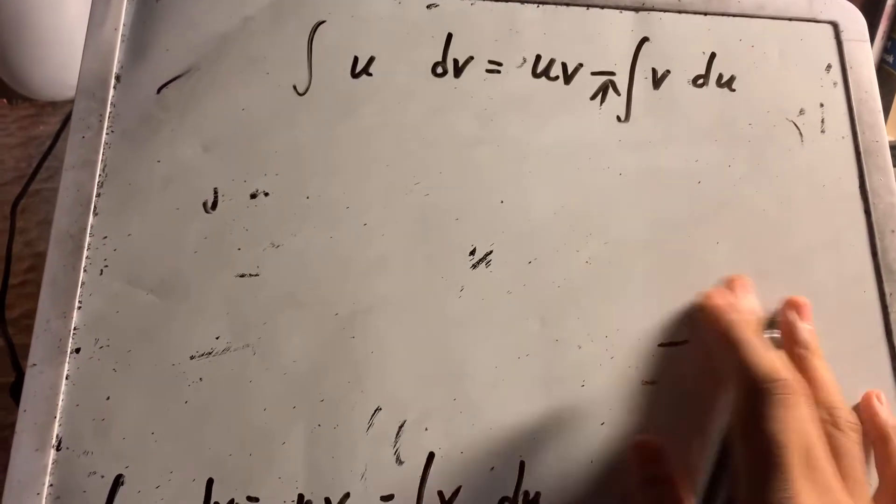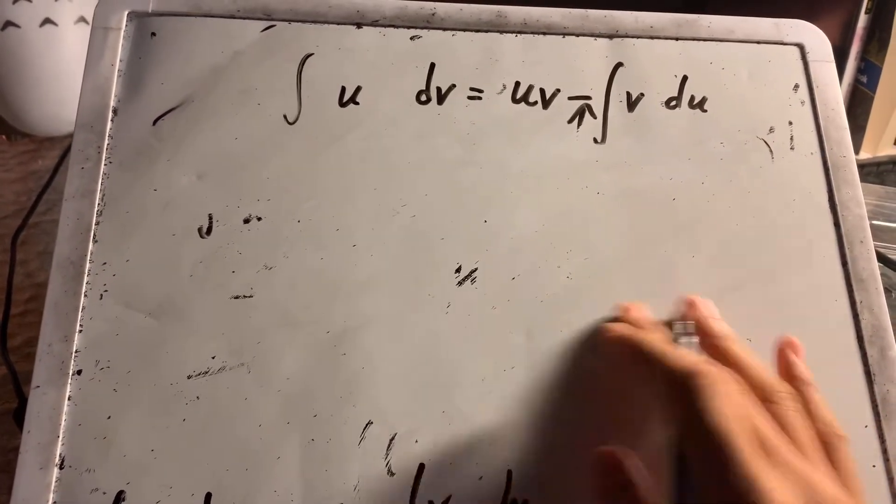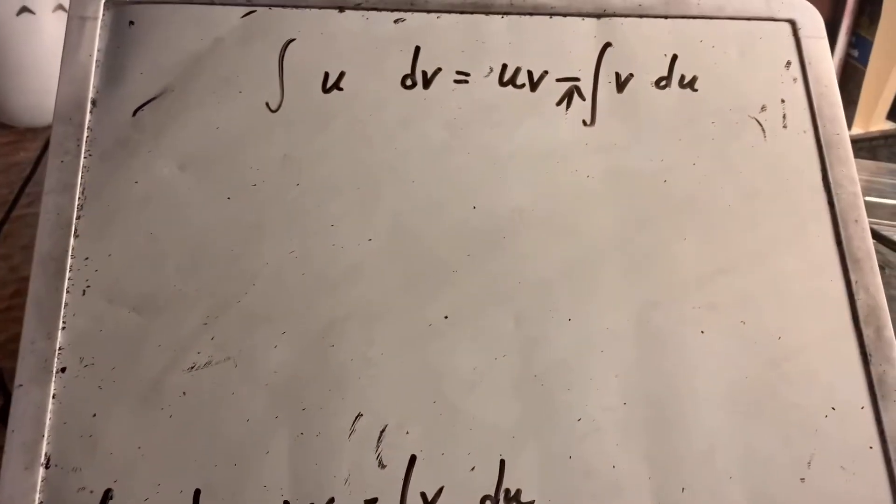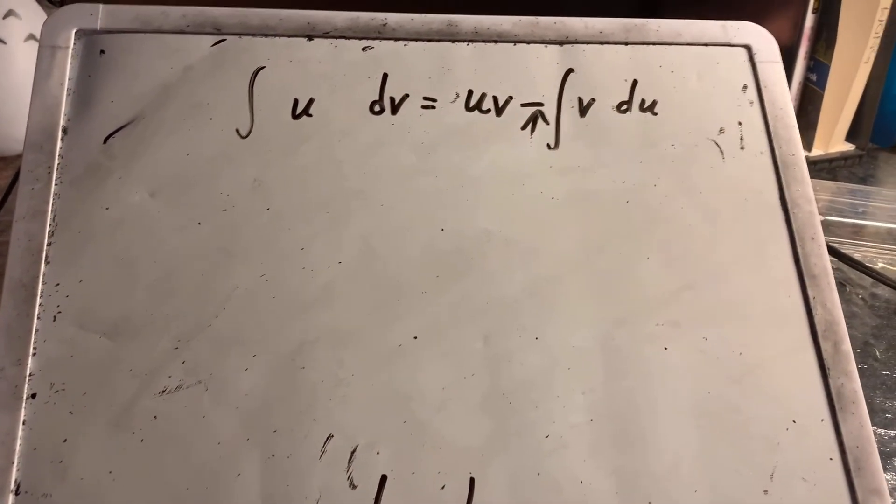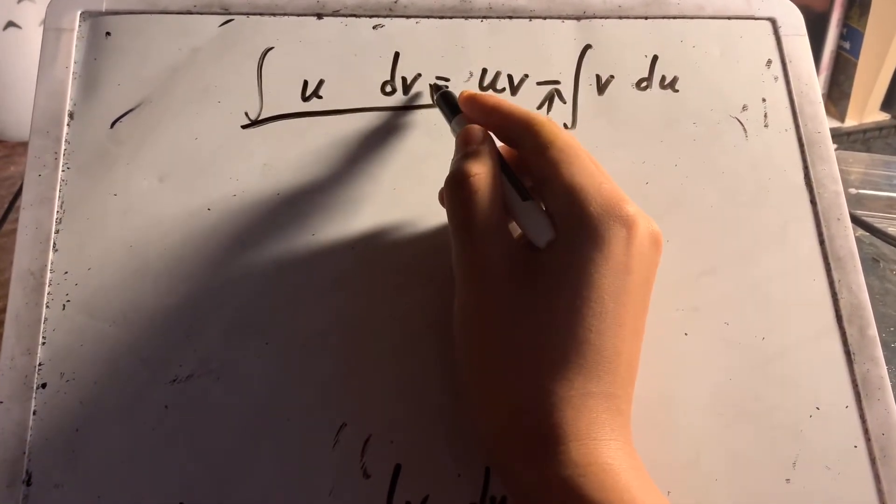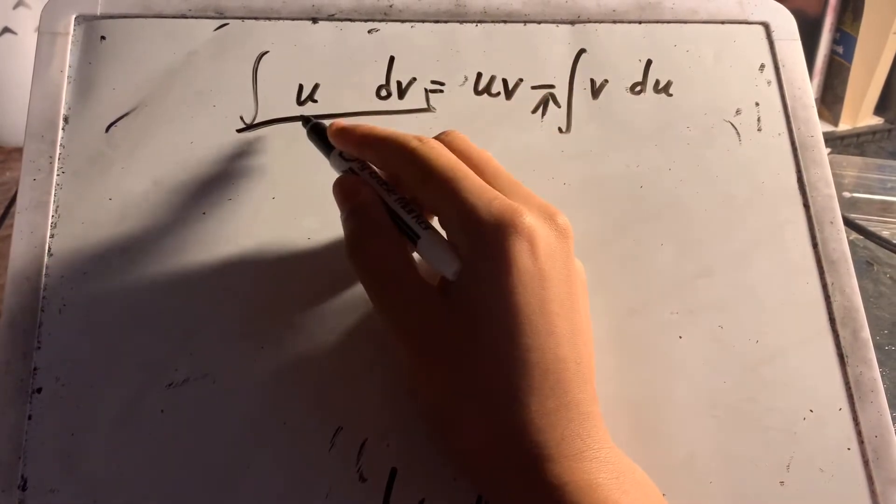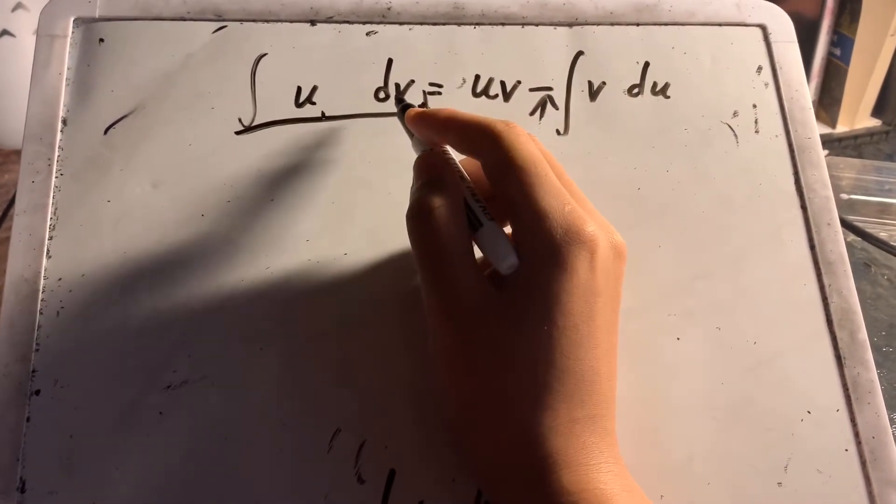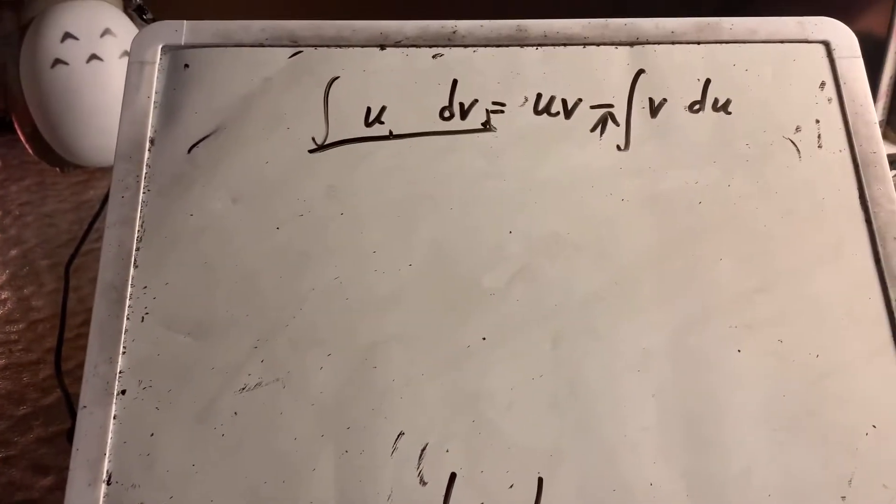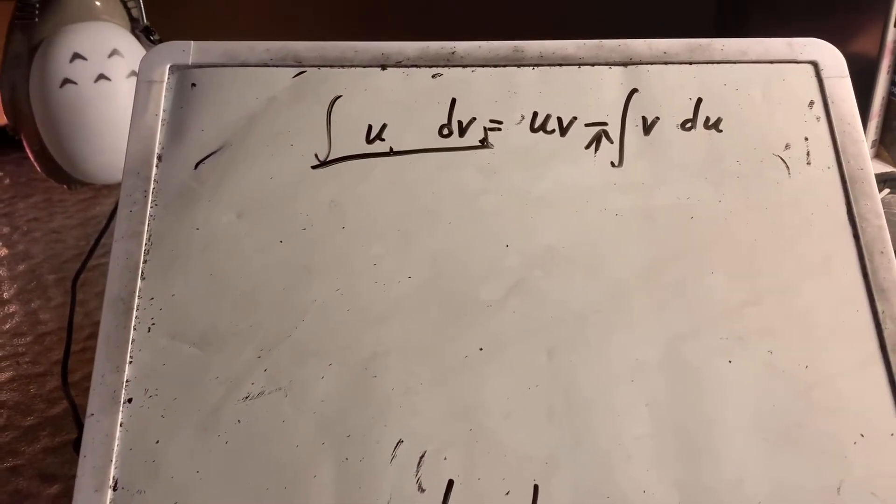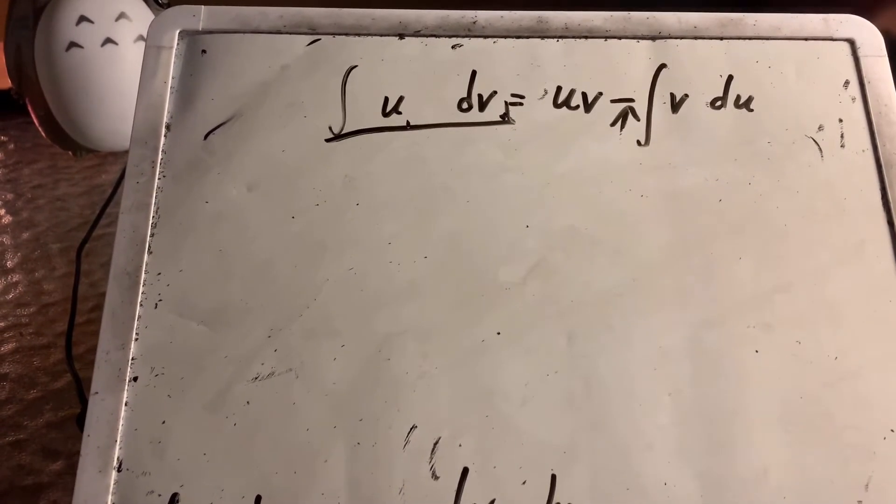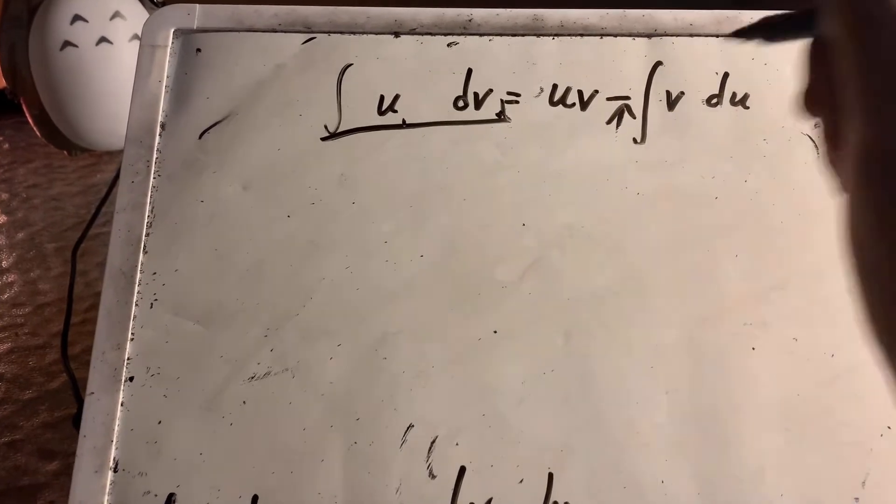Integration by parts is one of the hardest integral concepts. Actually, not hard. The most important part is to find the left part, to plug in u and dv as the original parts. This is the most important thing required to solve the entire equation.